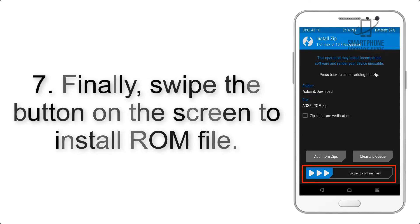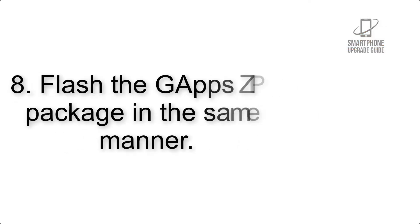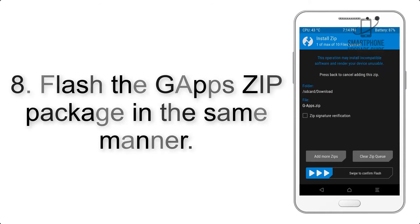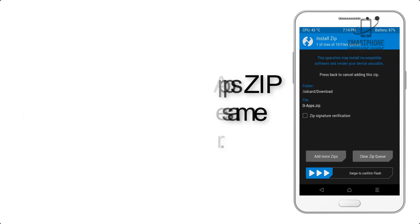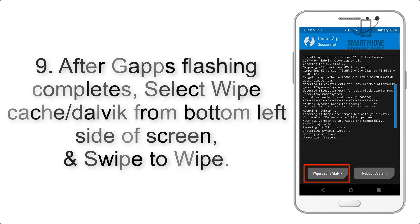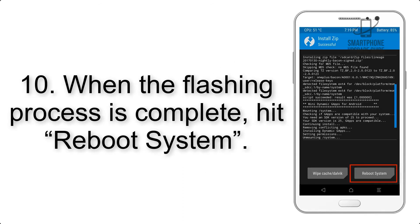Step 7: Swipe the button on the screen to install the ROM file. Step 8: Flash the GApps zip package in the same manner. Step 9: After GApps flashing completes, select Wipe Cache and Dalvik from the bottom left side of the screen and swipe to wipe.